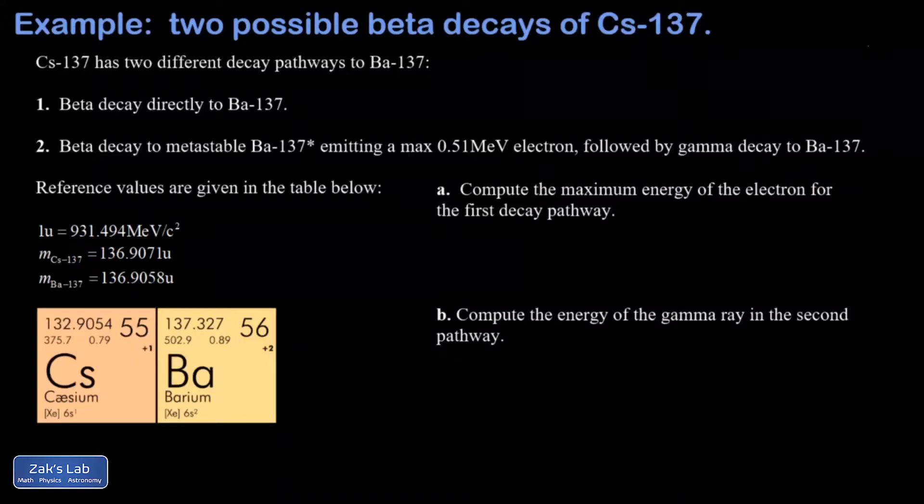In this video we're looking at the beta decay of cesium-137, and we're told there are two different pathways for this to occur. First, you could have a beta decay directly to barium-137. Notice in the periodic table here we're